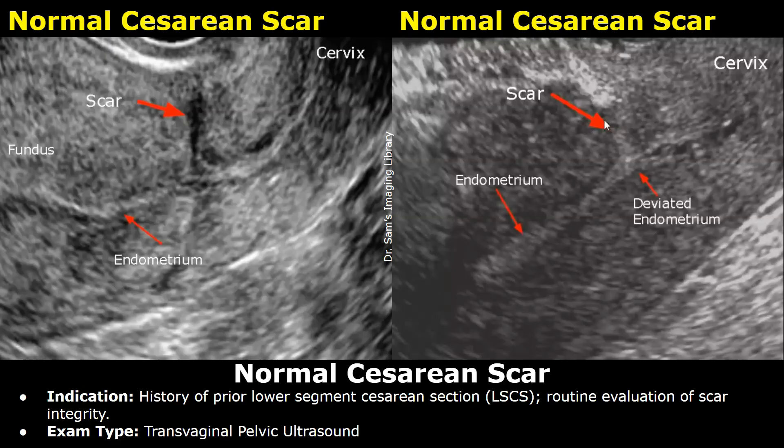Our first example is about a normal cesarean section scar evaluation. Indication: history of prior lower segment cesarean section, routine evaluation of scar integrity. Exam type: transvaginal pelvic ultrasound.